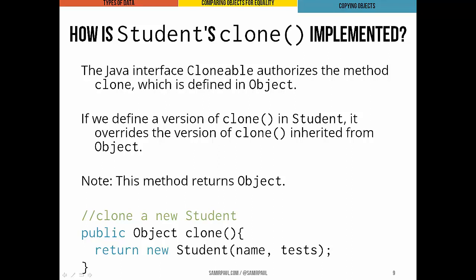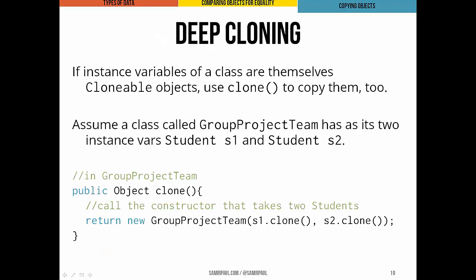Here's what the student class's clone method looks like: it returns an object, and all we do is return a newly instantiated student which takes the name and test scores of this student as parameters. Many of Java's standard classes, like String, already implement the Cloneable interface and include a clone method. But when instance variables of a class we're writing are themselves clonable objects, it's a good idea to call their clone methods when implementing our own clone method.